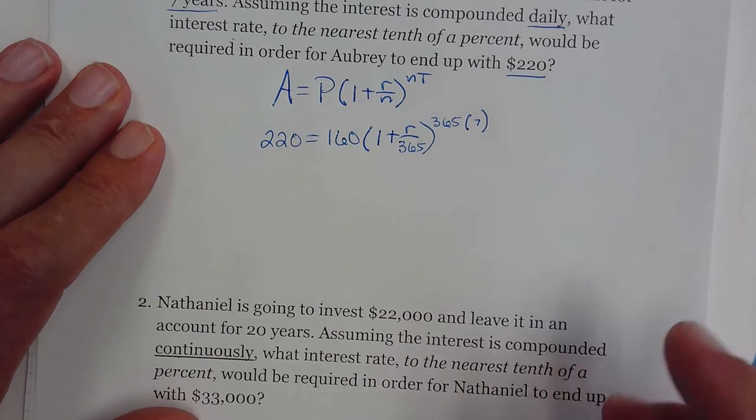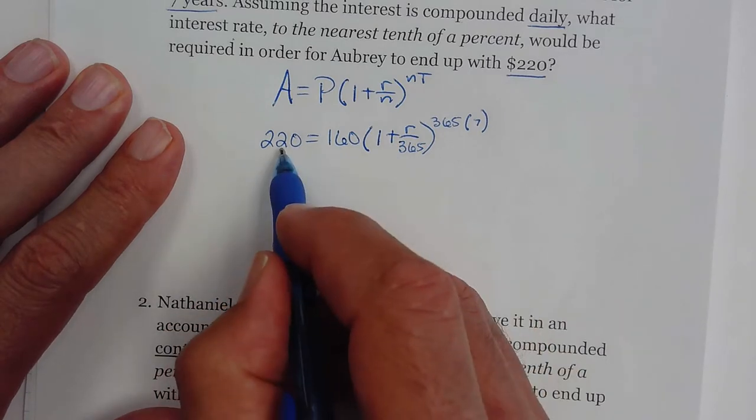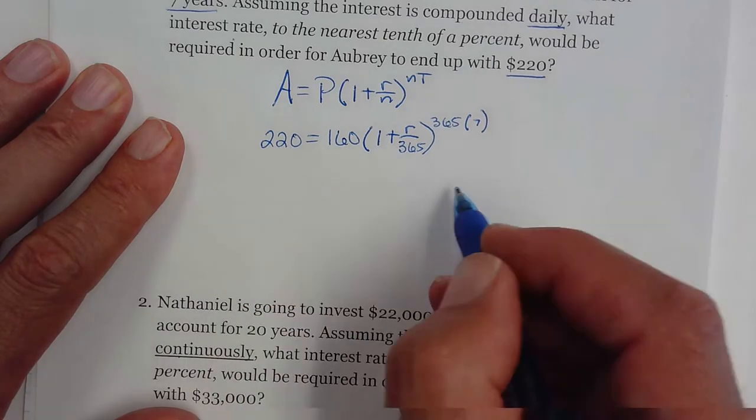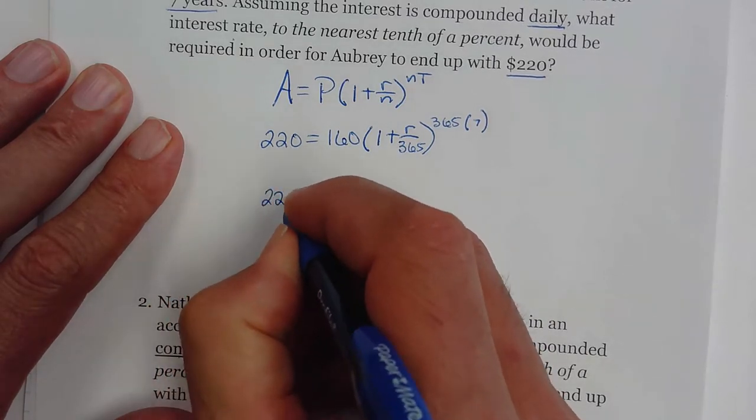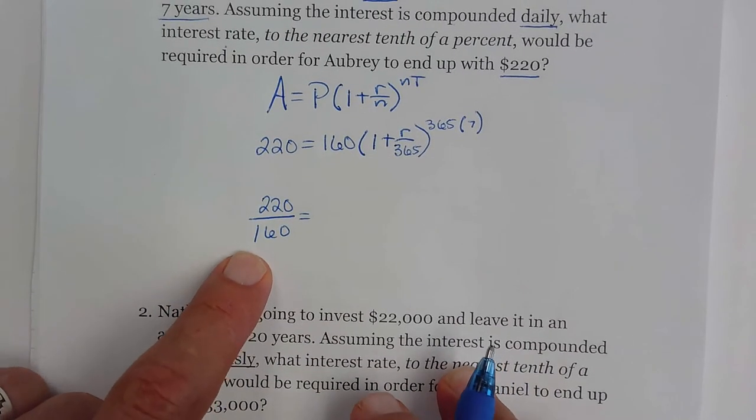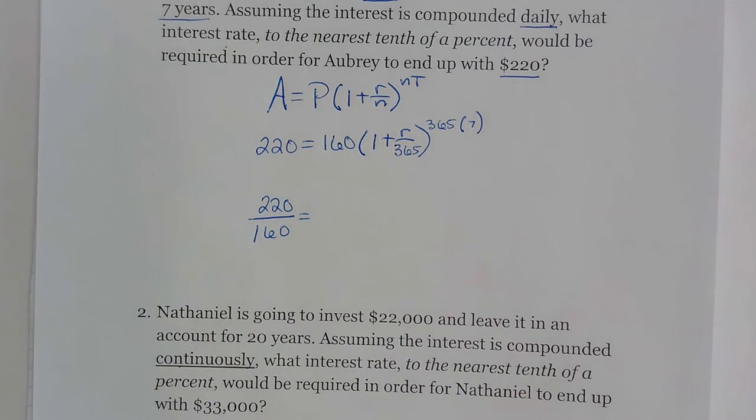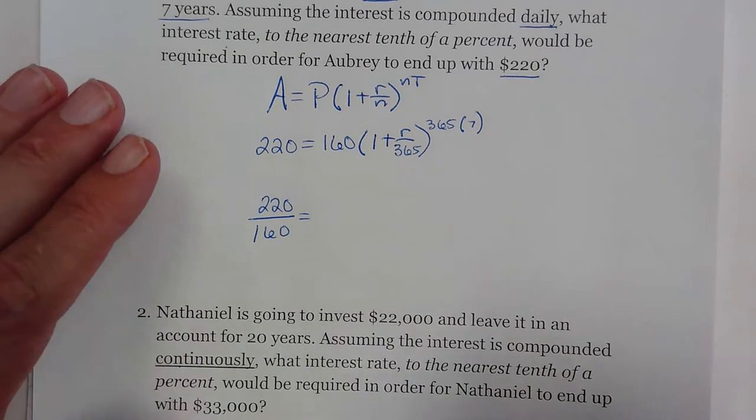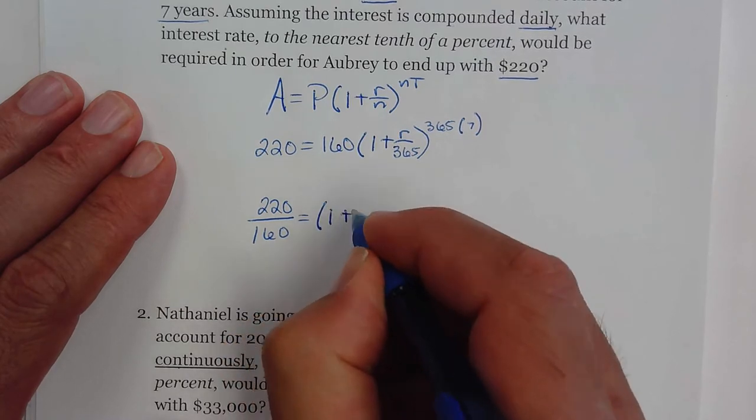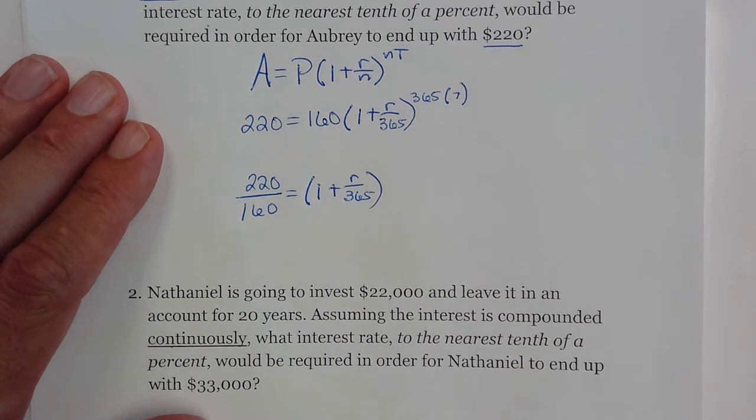Okay, so your next step is the following process: you want to take the final amount and divide it by the initial amount, so 220 divided by 160. The second step you want to do is figure out what this exponent is going to be, so you have (1 + r/365) and we got to do 365 times 7.